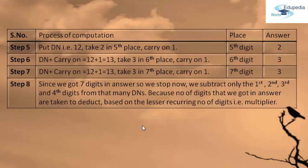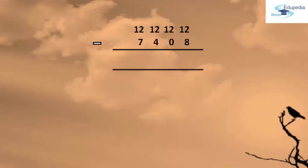Moving to Step 8, we now have 7 digits of the answer and we are going to stop. We separate the first, second, third, and fourth digits from the rest. This is because the digits we detect are based on the lesser recurring number of digits — that is the multiplier. Now we write all the DNs — 12, 12, 12, 12 — and below that 7, 4, 0, 8.